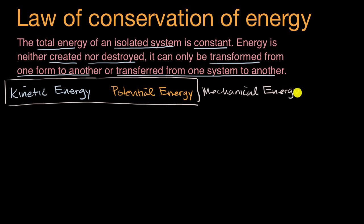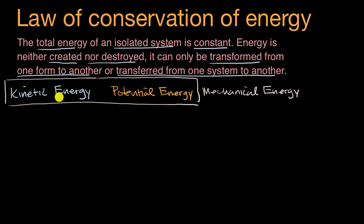When you're first learning physics, these are the types of energies we focus on. But there are other types of energy: thermal energy, nuclear energy, and chemical energy. So these aren't the only forms. When we talk about the law of conservation of energy, things like kinetic energy could be transformed into chemical energy, but we're not going to talk about those other types in this video.